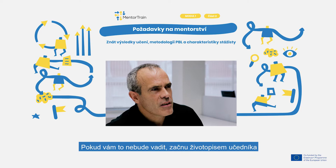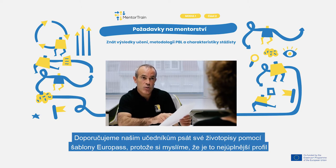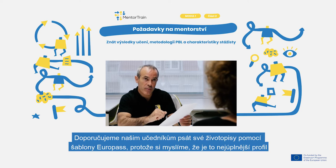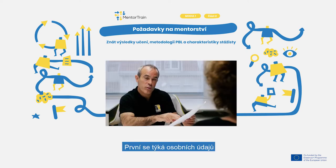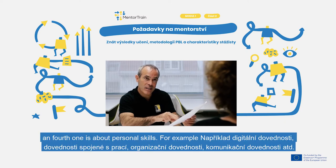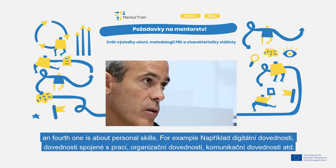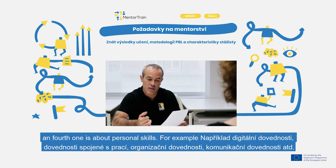If you don't mind, I will start with the curriculum vitae of the apprentice. We advise our apprentices to write their CVs using the Europass template because we think it's the most complete profile. There are four main points you can see here: first, personal information; second, work experience; third, education and training; and fourth, personal skills — for example, digital skills, job-related skills, organizational skills, communication skills, etc.